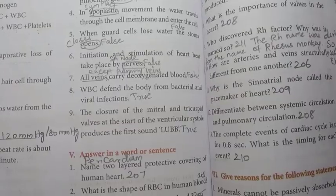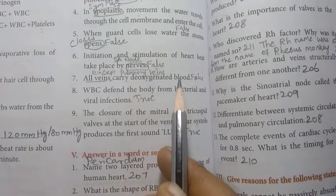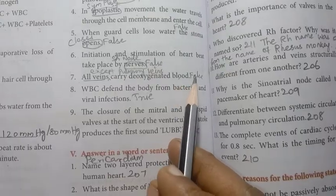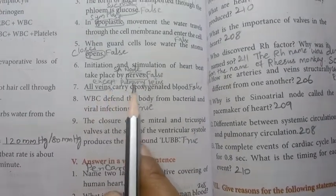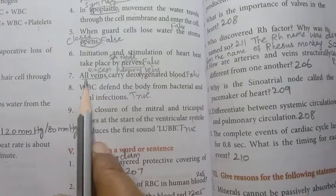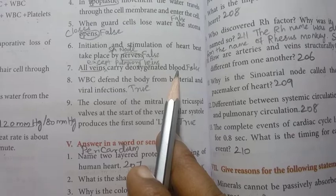Then: all veins carry deoxygenated blood. The statement is false. Not all veins, all veins except pulmonary veins carry deoxygenated blood. That is the correct statement.